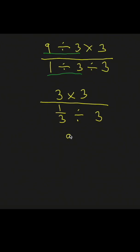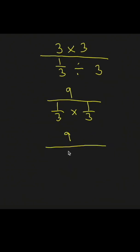Finally, 3 times 3 is 9. 1 third divided by 3 is the same as 1 third times the reciprocal of 3, which is 1 third. And 1 third times 1 third is 1 ninth.